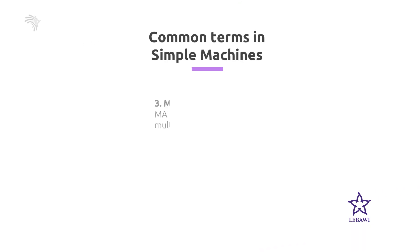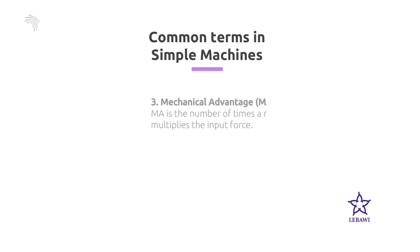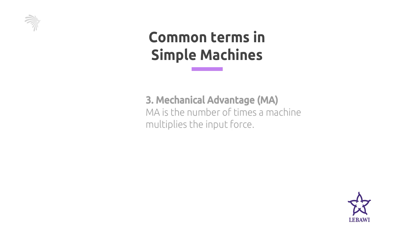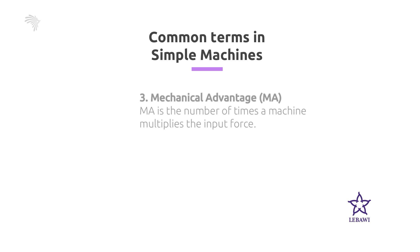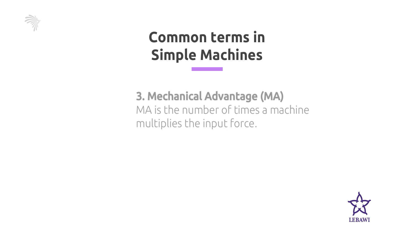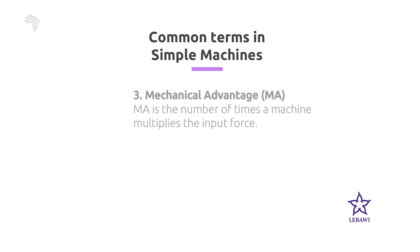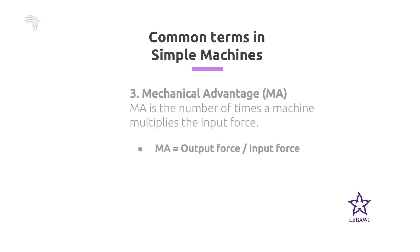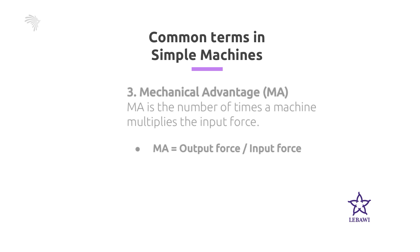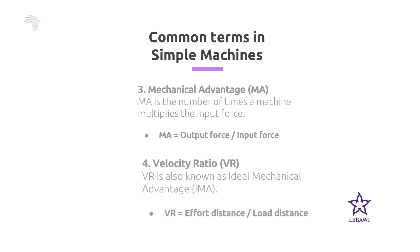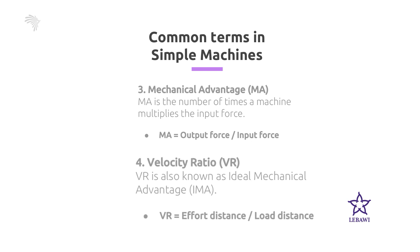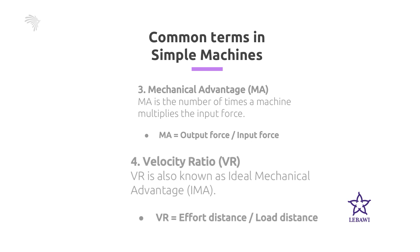The other term is mechanical advantage. We have two types: actual mechanical advantage and ideal mechanical advantage. The actual mechanical advantage is the number of times a machine multiplies the input force. It is calculated by output force divided by input force, and it has no unit. The ideal mechanical advantage, also known as velocity ratio, is the ratio of effort distance to load distance. These two values tell us about the purpose of a simple machine.